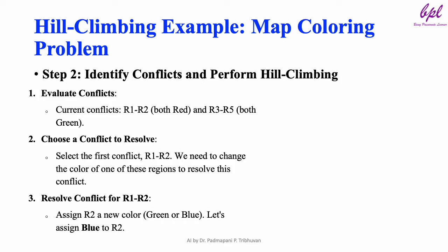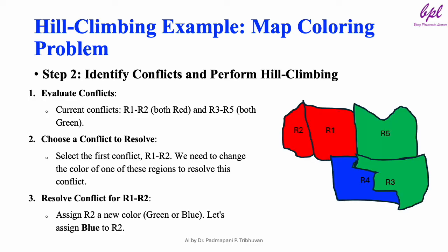Step 2: Identify conflicts and perform hill climbing. First, we evaluate conflicts by checking each pair of adjacent regions — if they share the same color, it is a conflict. Currently we have two conflicts: R1 and R2 are both red, and R3 and R5 are both green. We select the first conflict, R1 and R2, and change the color of one region to resolve it. We assign blue to R2, giving us: R1 red, R2 blue, R3 green, R4 blue, R5 green. The conflict between R1 and R2 is now resolved.